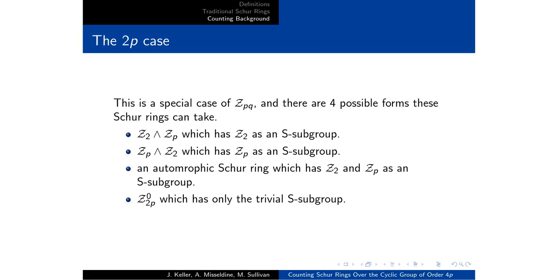There are four possible forms: Z2P wedge ZP, ZP wedge Z2, and an automorphic, or in this case automorphic and direct product are equivalent, or Z2P0. So there are x of the first three types, and there's one trivial Schur ring.